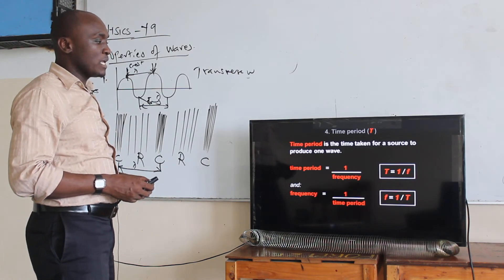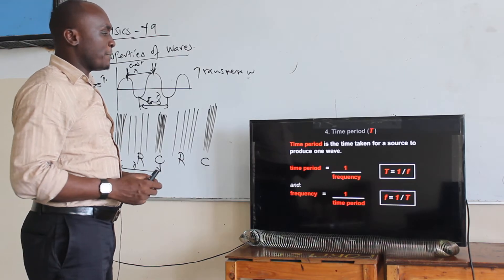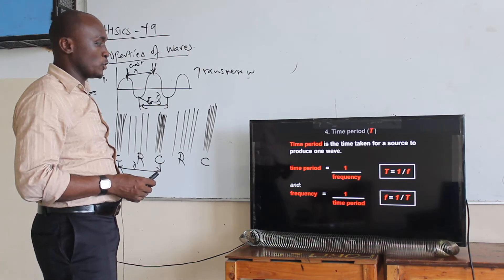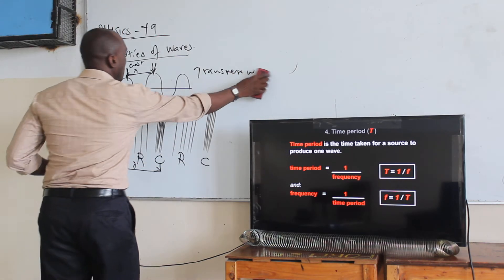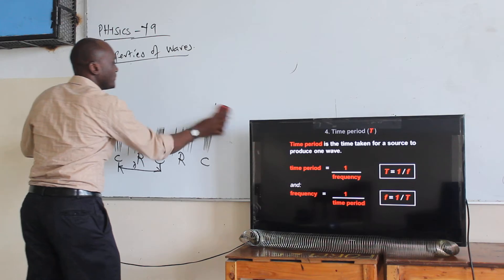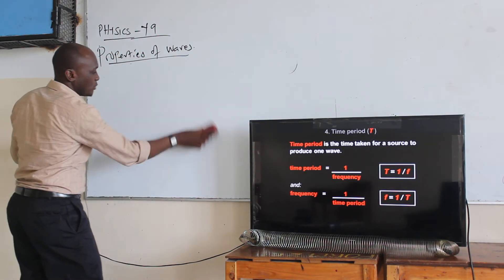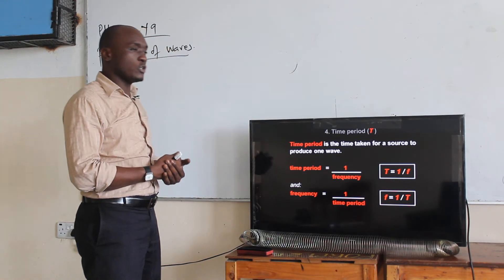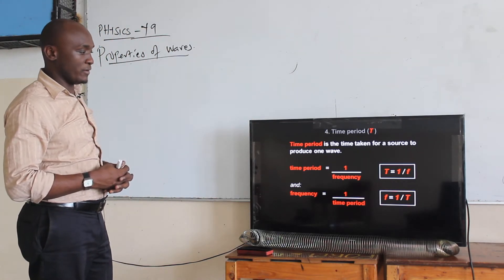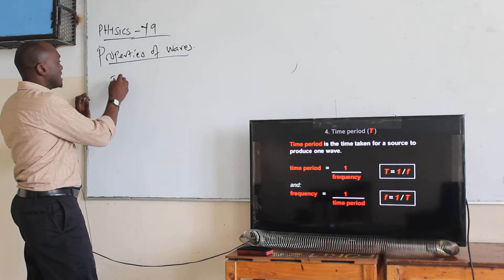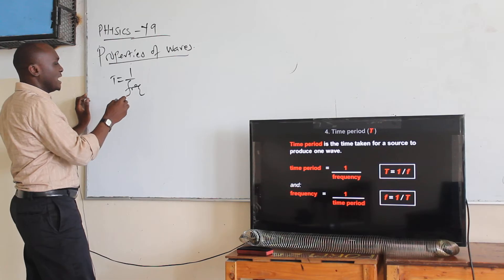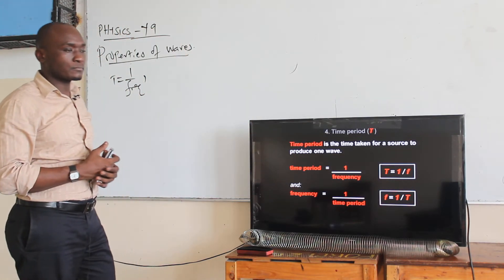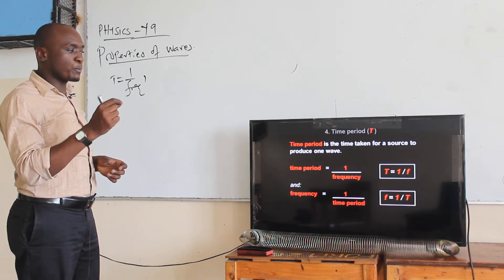We are going to call the time period, capital T. The time period is the time taken for a source to produce one wave. I am going to explain the relation between frequency and time period. The time period T is actually one over frequency, and the time taken for a source to produce one wave.